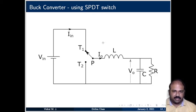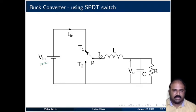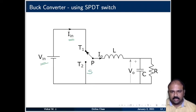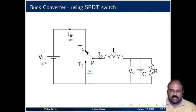The buck converter circuit seen previously has been drawn on a bigger slide. There is a voltage source with voltage Vin which sends out an input current Iin. This is the SPDT switch, and an output current flows through the inductor. We have a capacitor as the filter — an inductor filter to filter out ripples in the current and a capacitor to filter out ripples in the voltage — and a load resistance across which we have a steady output voltage V0.